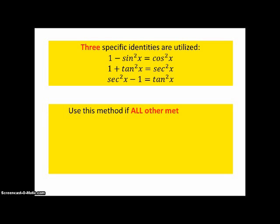You use this method if all other methods fail and you see the following that can be changed into one of these trigonometric expressions. a² minus b²x² which would match the first identity. a² plus b²x² which matches the second identity with some adjustment. Or a²x² minus b² which matches the third identity with some adjustment that I'll show you in the examples.